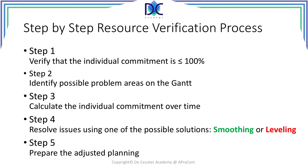Then we try to resolve the issues using possible solutions — we can call this smoothing or leveling. Smoothing means we use the available slack in the project to resolve any resource issues without increasing the project duration. Leveling is when we resolve the resource problem but have to extend the duration of the project. Step five, the last step, is where we prepare the adjusted planning — the final planning or the baseline for the project.